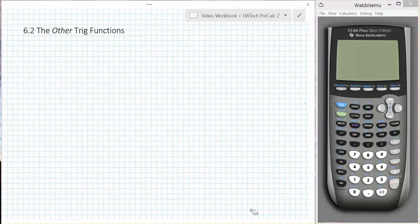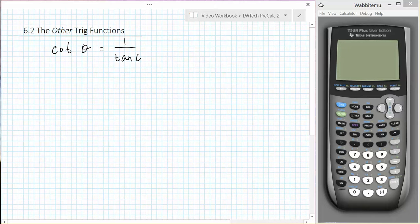The final trigonometric function we have left to discuss is the cotangent. We've defined the cotangent of an angle in two different ways. The cotangent of theta is equal to 1 over the tangent of theta, or the cotangent of theta equals the cosine of theta divided by the sine of theta.